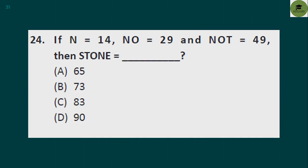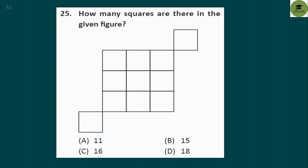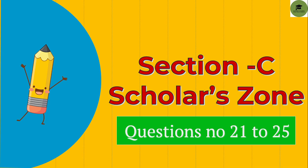Question 25: how many squares are there in the given figure? If you calculate all the squares — including all sizes — you will find there are 16 squares in this figure. Option C is the correct answer. Now let's go to the next section: section C, the Scholar Zone, which covers questions 26 to 30.